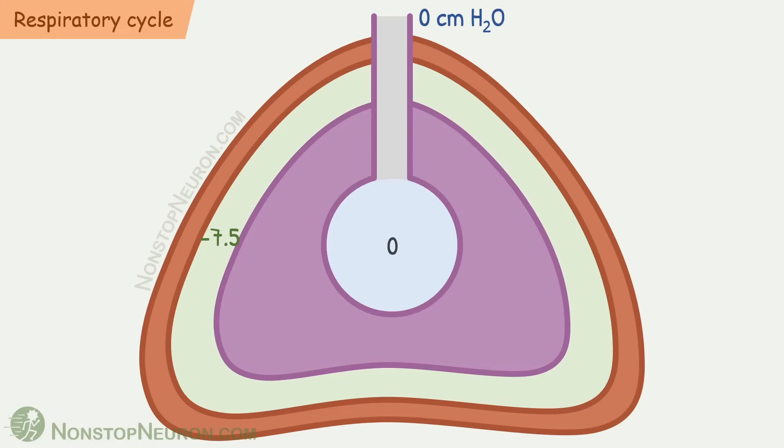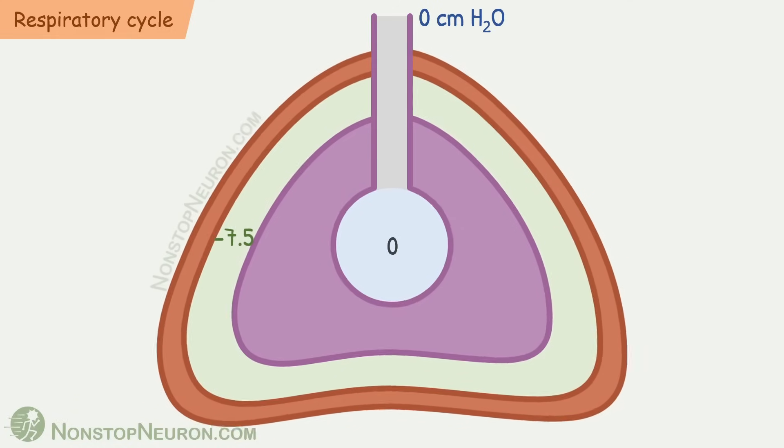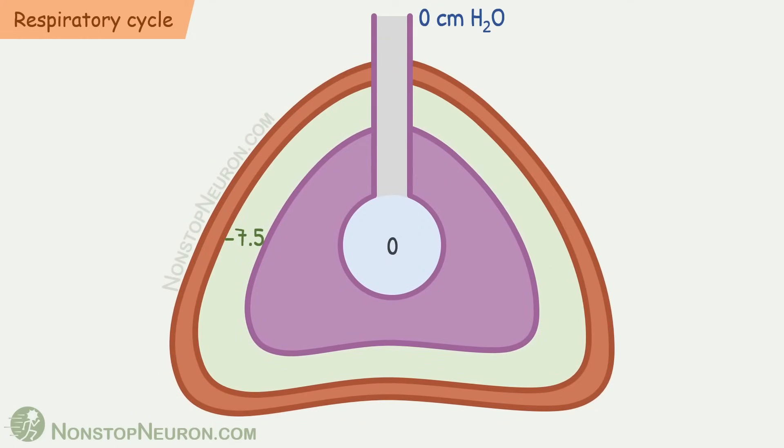Thus, at the end of inspiration, the pressure in alveoli comes back to 0 cm of water. Then during expiration, chest wall and lungs collapse. So pleural pressure increases and returns to -5 cm of water. The alveolar pressure initially increases to +1 cm of water. It pushes the air out of lungs till the pressure balances with atmospheric pressure again.